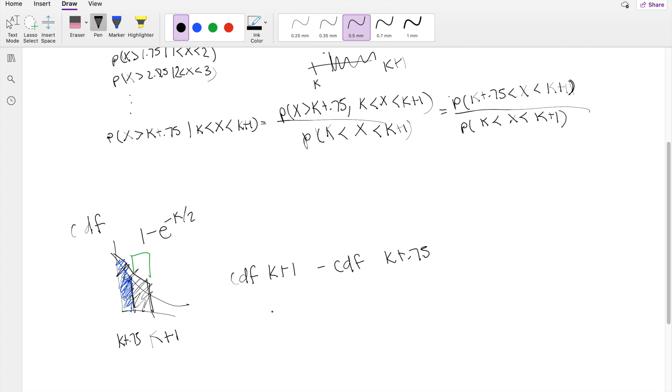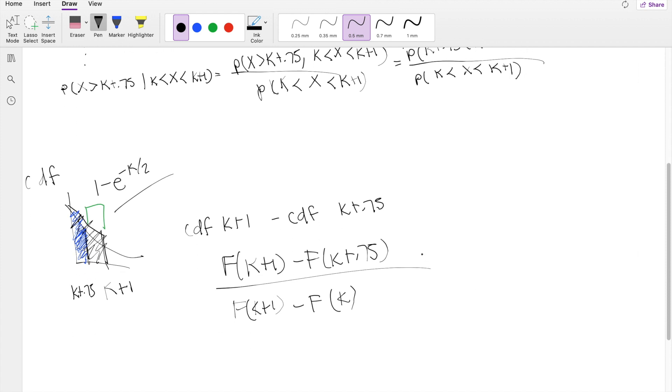So knowing that, the numerator is going to be exactly that, the f of k plus 1 minus the f of k plus 0.75, divided by the f of k plus 1 minus the f of k, and we know the CDF is right here, so we can just plug that sucker in.